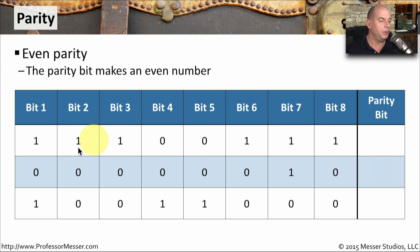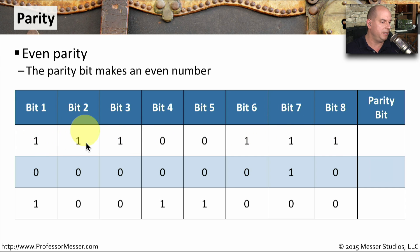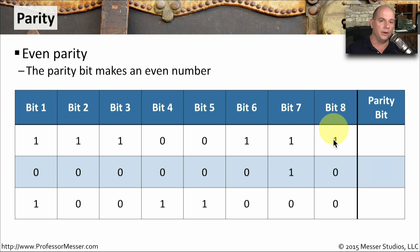Parity works by examining how many ones are in that byte. Counting them, there are six ones. Since six is an even number, we don't need another 1 — so the parity bit is going to be 0.